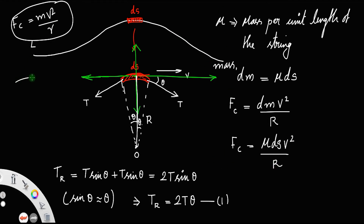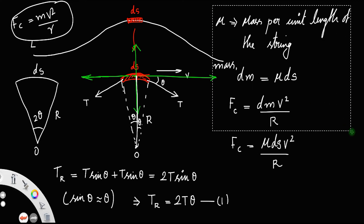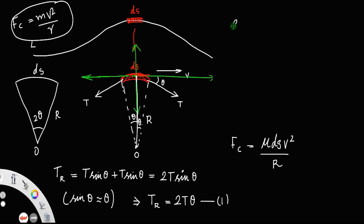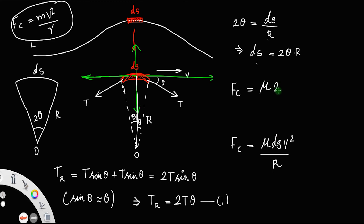When we look at the arc, its length is ds, the radius is r, and the whole angle subtended is 2θ. Using the relation angle = arc length / radius, we get 2θ = ds / r, which implies ds = 2θr. Substituting this into the centripetal force expression, Fc = μ · 2θr · v² / r. The r cancels, giving Fc = 2μθv². Let us call this equation 2.